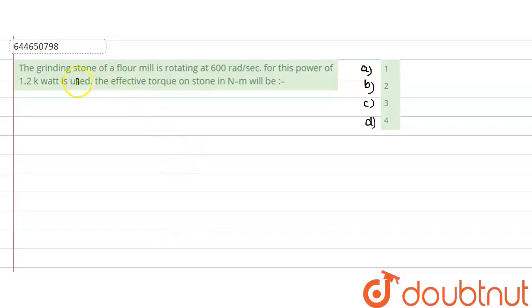In this question, what is given? The grinding stone of a floor mill is rotating at 600 radians per second. Now for this, power of 1.2 kilowatts is used. The effective torque on the stone in newton meter will be?